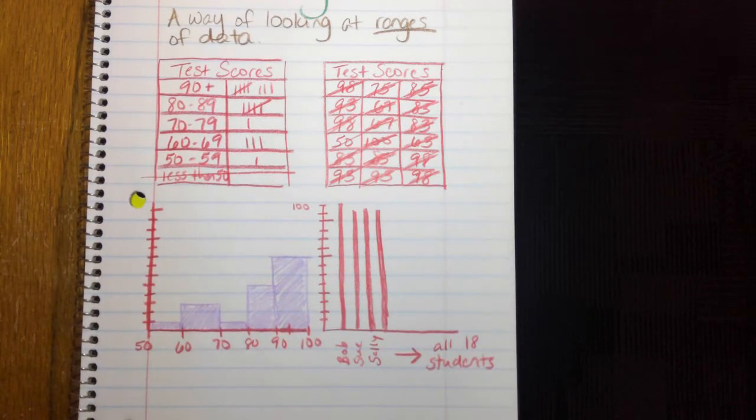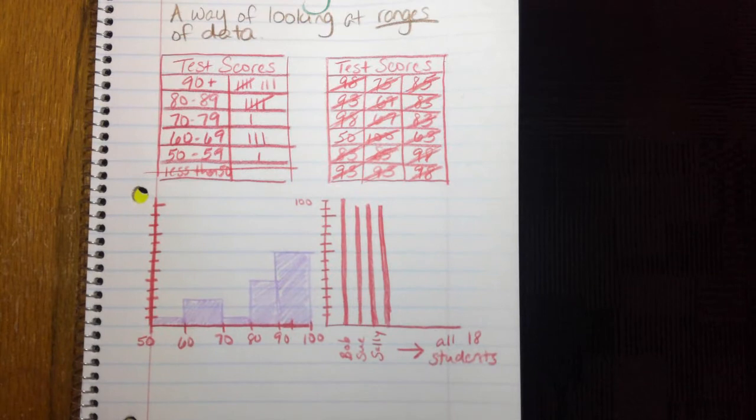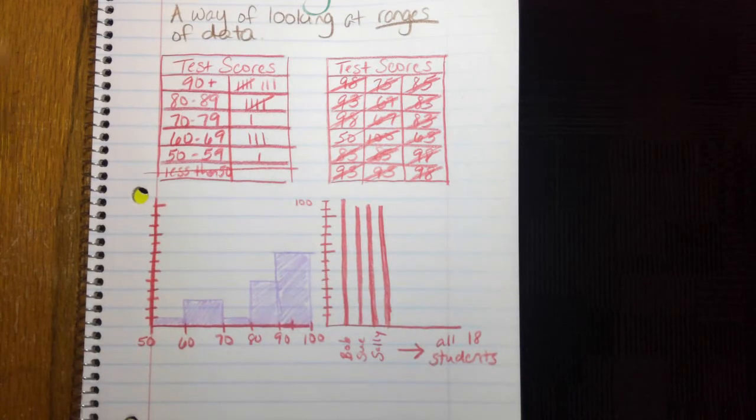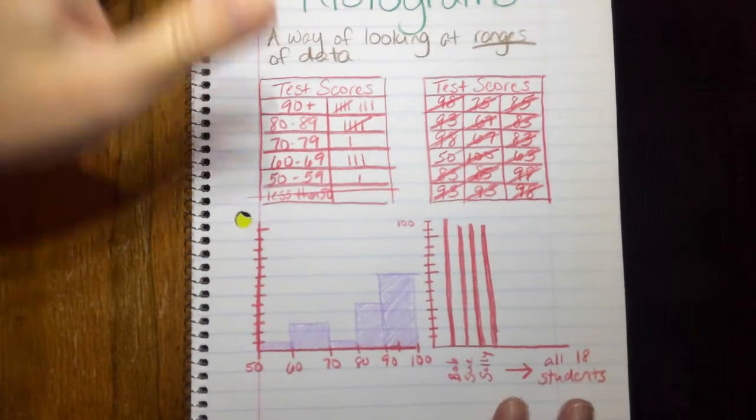So this graph can actually show me that, in general, my class did pretty well. Like, look, most people made 100, but there's this little chunk of people down here that didn't do so well.